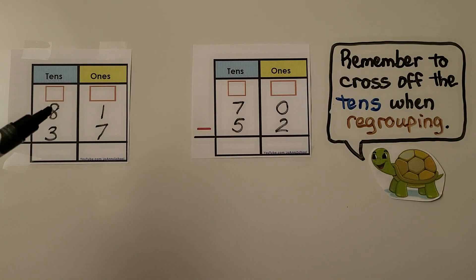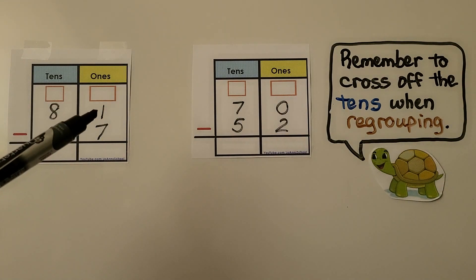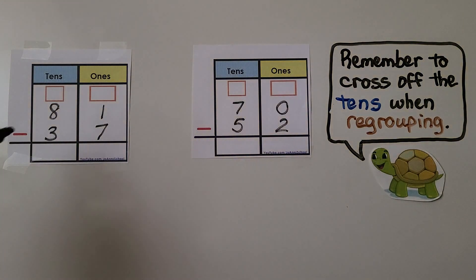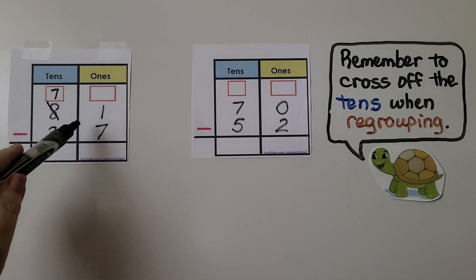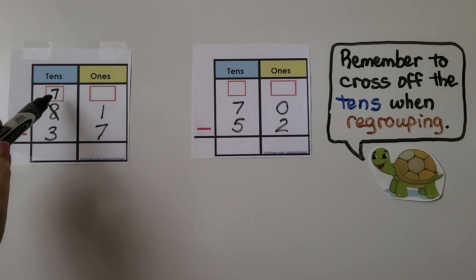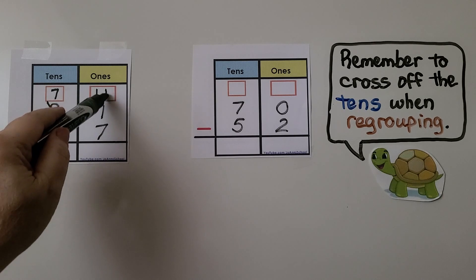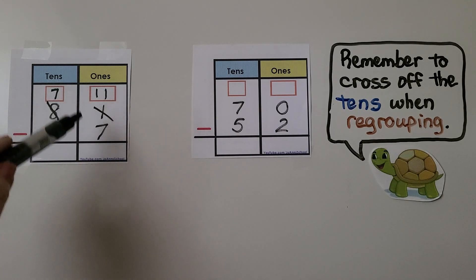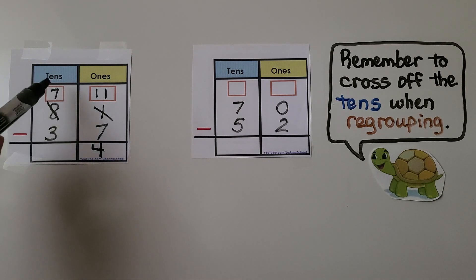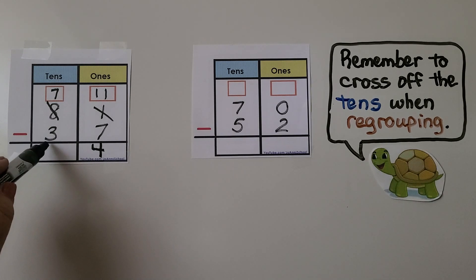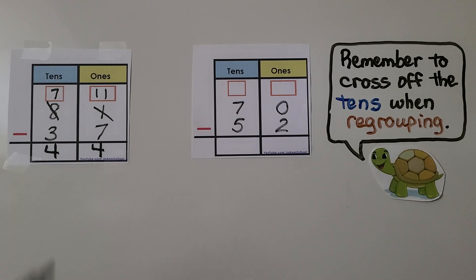Here we have 81 minus 37. We look at the ones: can we take 7 from 1? No. So we need to regroup from the tens place. 8 tens becomes 7 tens. We give that 10 to the ones as 10 ones. We already have 1, so the 10 we took and that one makes 11 ones. Now we have 11 ones minus 7 ones — that's 4 ones. Now we have 7 tens minus 3 tens — that's 4 tens. That means 81 minus 37 is equal to 44.